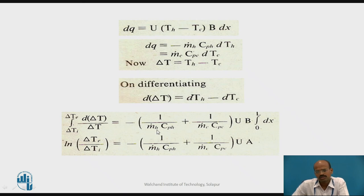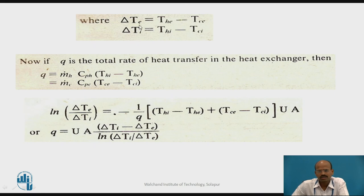Since DT by delta T is equal to minus 1 by MH into CPH plus 1 by MC CPC. This is the heat flow rate of the hot fluid, heat flow rate of the cold fluid into UB. I can cover the total area, total surface of the heat exchanger by taking integration. That is, del T I to del T E. Similarly, here taking integration 0 to L of dx. Then, I can write the equation LN del T by del T is equal to minus 1 by MH CPH plus 1 by MC CPC into UA. In this equation, delta T E is equal to delta T HE minus TCE and delta T I is equal to THI minus TCI.